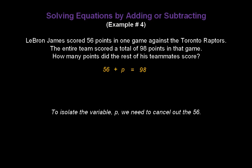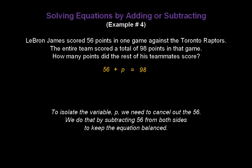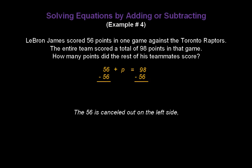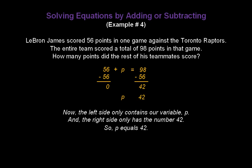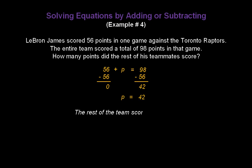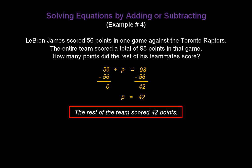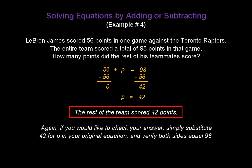To isolate the variable P, we need to cancel out the 56. We subtract 56 from both sides to keep the equation balanced: minus 56 on the left, minus 56 on the right. The 56 is cancelled out on the left because 56 minus 56 is 0. On the right side, 98 minus 56 gives us 42. The left side only contains P, and the right side has 42, so P equals 42. Since it's a word problem, the answer is: the rest of the team scored 42 points. You can check by substituting 42 for P and verifying both sides equal 98.